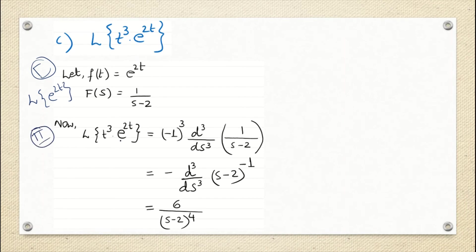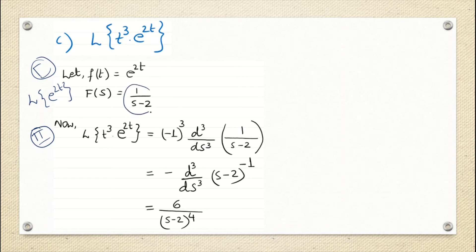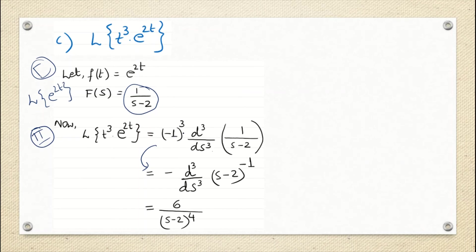The second step: f(t) is multiplied by t to the power 3. That means we apply minus 1 to the power 3, d³/ds³ of F(s), where F(s) is 1 by (s minus 2). We rewrite 1 by (s minus 2) as (s minus 2) to the power minus 1. If it were t to the power 4, it would be d⁴/ds⁴, and so on. Minus 1 to the power 3 is just minus 1, and we perform d³/ds³.